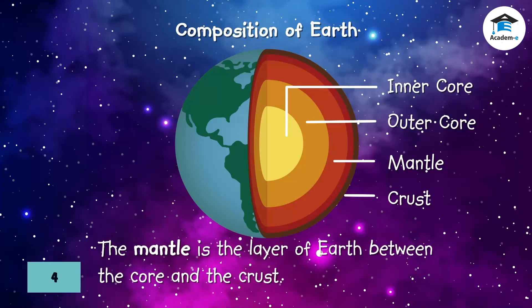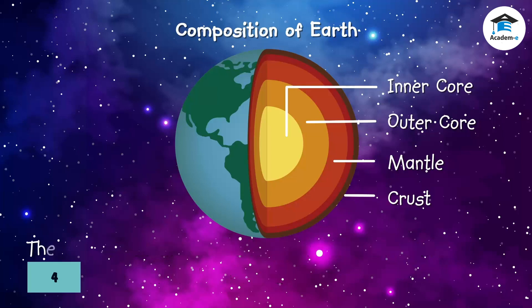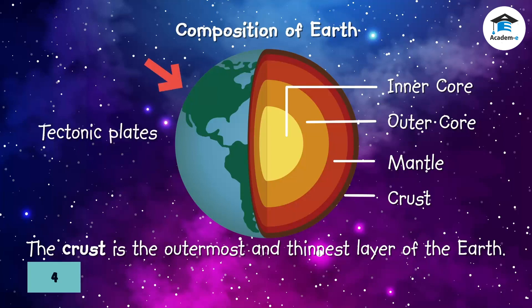The mantle is the layer of Earth between the core and the crust, mostly made up of iron, silicon, and magnesium. The crust is the outermost and thinnest layer of the Earth, broken into large and small tectonic plates which are massive slabs of rock that move on Earth's surface. They can be categorized into continental plates and oceanic plates. Continental plates are the continents while oceanic plates are mainly at mid-ocean ridges.